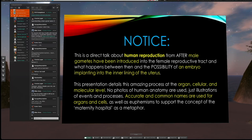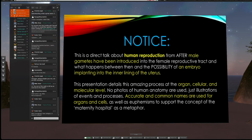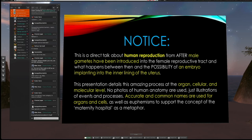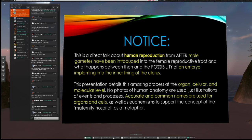As a caveat, for anyone who's squeamish: this is a direct talk about human reproduction from after the male gamete has been introduced until the possibility of an embryo implanting in the inner lining of the uterus. The presentation details this amazing process at the organ, cellular, and molecular level. There are no photos of human anatomy — it's what goes on inside that a lot of people don't know.